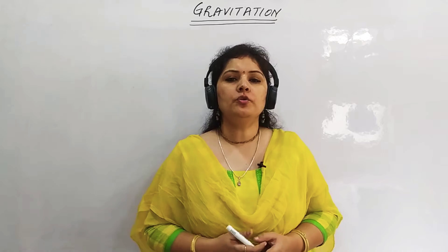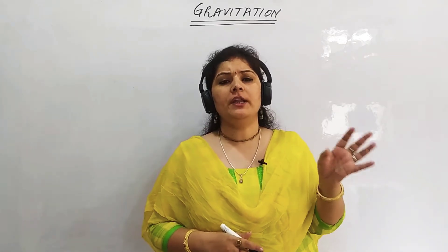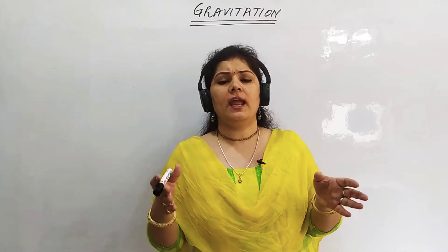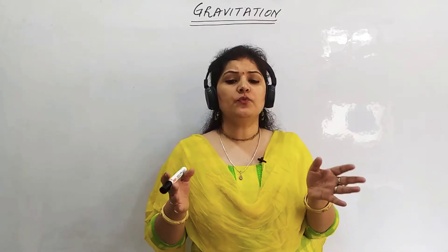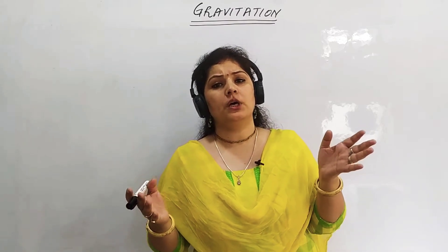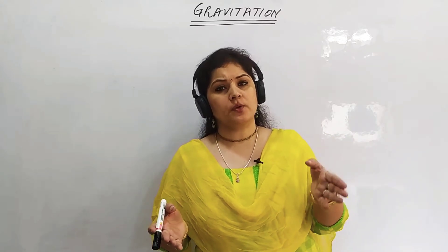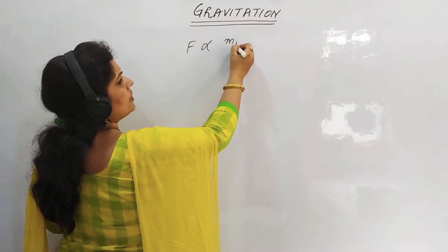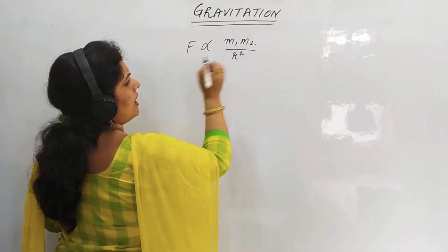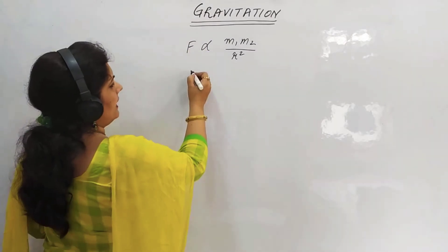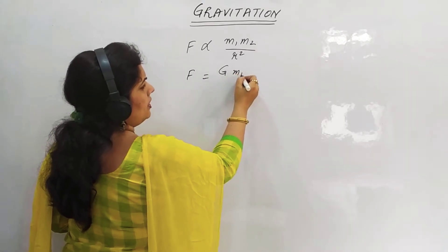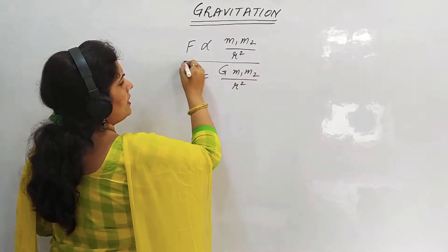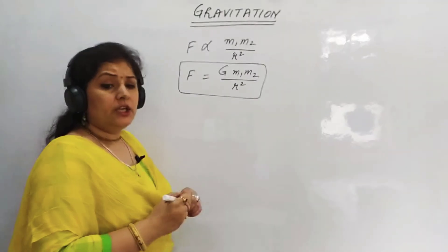Good morning. In our last lecture we learned about the universal law of gravitation. According to this law, every body in the universe attracts any other body with a force. This force of attraction is directly proportional to the product of the masses and inversely proportional to the square of the distance. Combining both, F is proportional to m1·m2/r², and to remove the proportionality sign we use a constant G, giving F = Gm1m2/r².